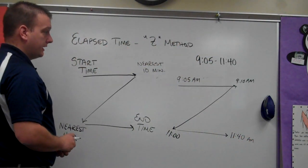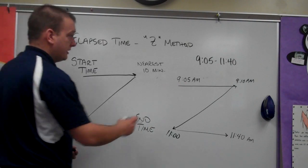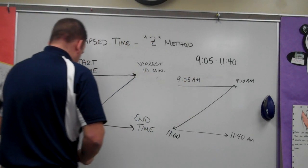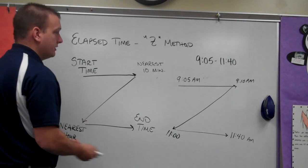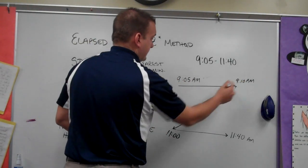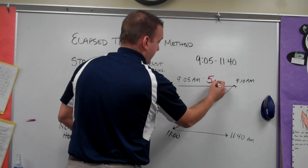Now, all I have to do is calculate the minutes and the hours on the different parts and add them up. So from 9:05 to 9:10, that's five minutes.